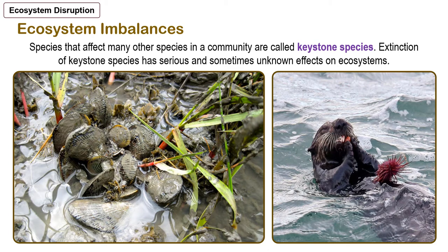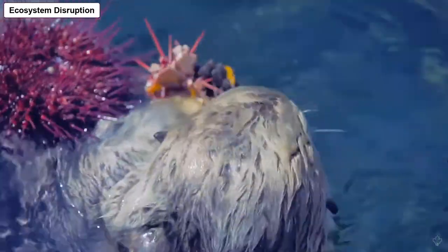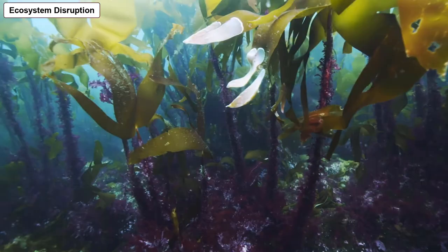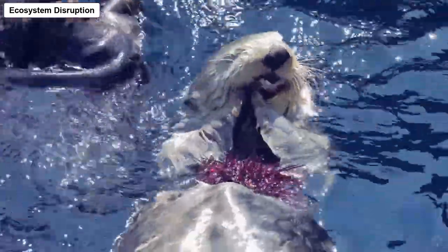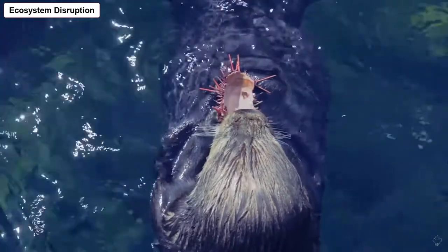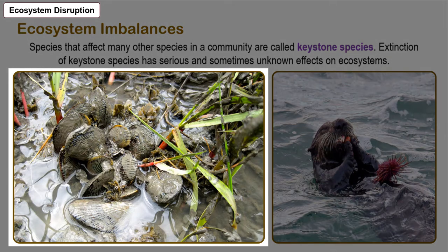No one can predict the results of the loss of millions of species. We do know that some species are critical to the functioning of ecosystems. Sea otters fed heavily on sea urchins, whereas sea urchins fed on giant kelp that formed the basis of an underwater forest community. When people hunted the otters to near extinction, the sea urchins increased in number, overfed on the kelp, and entire kelp communities began to disappear. Species such as the sea otter that affect many other species in a community are called keystone species, and extinction of a keystone species has serious and sometimes unknown effects on ecosystems. Bivalves are also keystone species in mangrove ecosystems — they probably filter the water of debris and lithotrophic microbes to allow more light penetration.